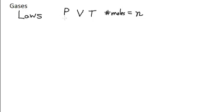The units: for pressure, we already talked about atmospheres, torr, or psi. Volume units include milliliters, liters, gallons, or whatever unit you want. Temperature — degree Celsius is the scale we usually use in the lab, but we also use the Kelvin temperature scale, and we're going to see that we need Kelvin when dealing with gases. The unit for number of moles is simply moles.